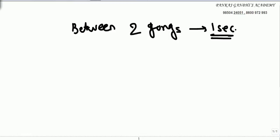Now the question is here. The clock strikes at an interval of 1 second, meaning between two gongs the time is 1 second. So when striking 1 o'clock, the number of intervals is going to be 0.